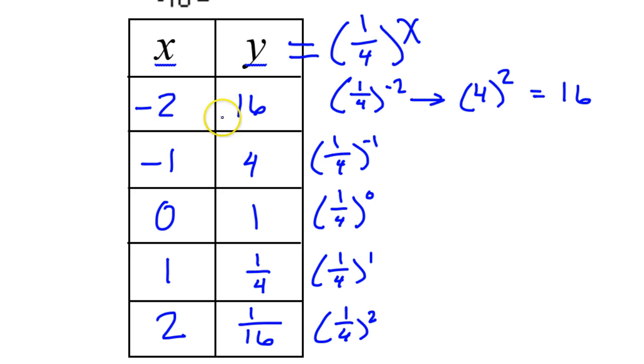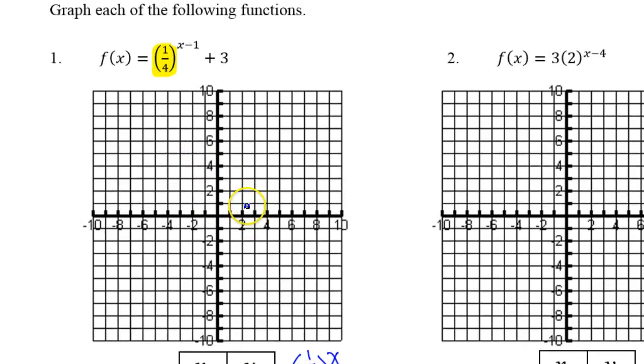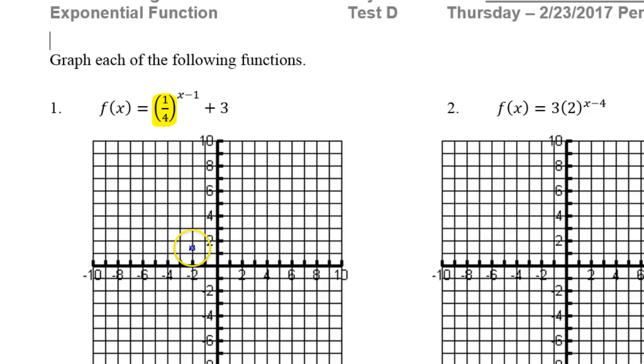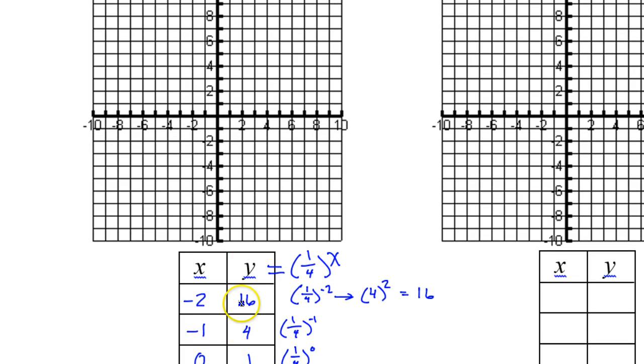We're ready to plot these values on the graph. These are not the final answers, so I will not connect them. So I have negative 2, 16. That's clearly going to be off the chart, but I'm just going to estimate. Here's negative 2, so this is 10, so I'm going to estimate that 16 would be about there. Negative 1, 4 is here.